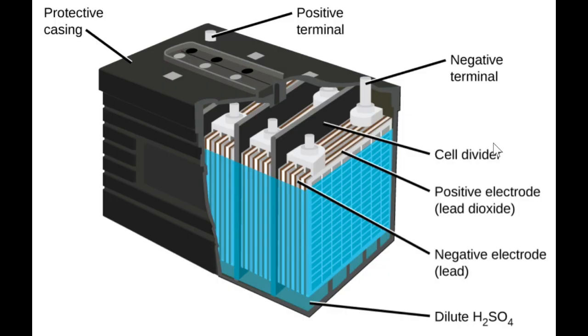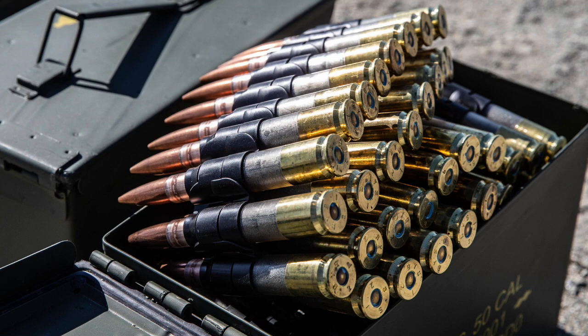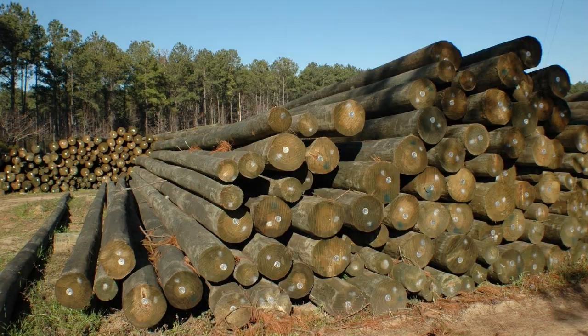Arsenic, as I mentioned before, is a small additive component to the particular lead alloy used in lead-acid batteries. It is also a similar small percentage part of the alloy used for ammunition. Combined with chromium, it's part of the lumber treatment for specifically outdoor application lumber to ward off pests and termites.